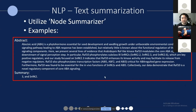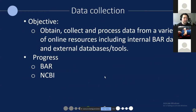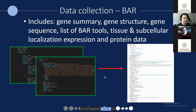None of this works without proper data collection or data aggregation. We have a lot of data processing going on — we collect and process results from a variety of different tools, including the BAR and NCBI, and other sources, presenting that information in a simple and easy-to-read format. From the BAR alone, we have gene summarization, gene structures, tissue expression data, and protein data, which we're reprocessing and presenting to the user in a simple, human-readable format.